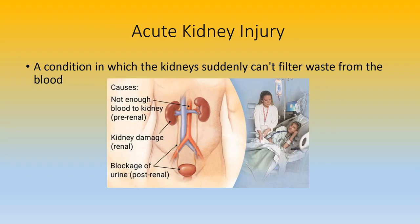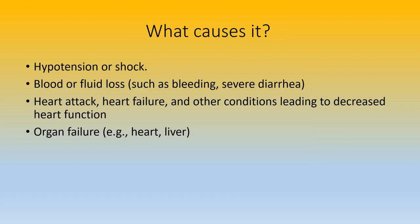With acute kidney injury, it's a condition in which the kidneys suddenly can't filter waste from the blood. This is usually three months or less and caused by some sort of secondary issue that could be easily fixed. Causes include hypotension and shock. Hypotension is low blood pressure, which could be due to lack of fluid — a severely dehydrated patient won't have enough circulating blood, causing blood pressure to drop.